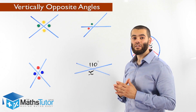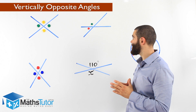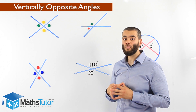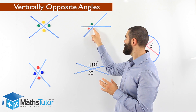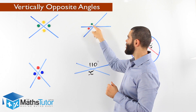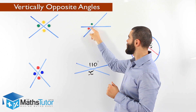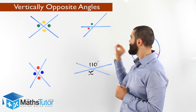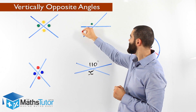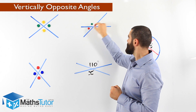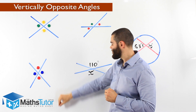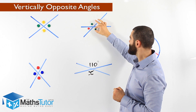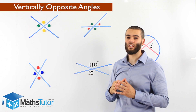Let's try this one — see if you can do it yourself before I start. I am looking for the vertically opposite angle to the red, and also the vertically opposite angle to the green. Have you figured it out? The red — I can see it and it is directly opposite, very easy to locate. And the green — opposite, very easy to locate.